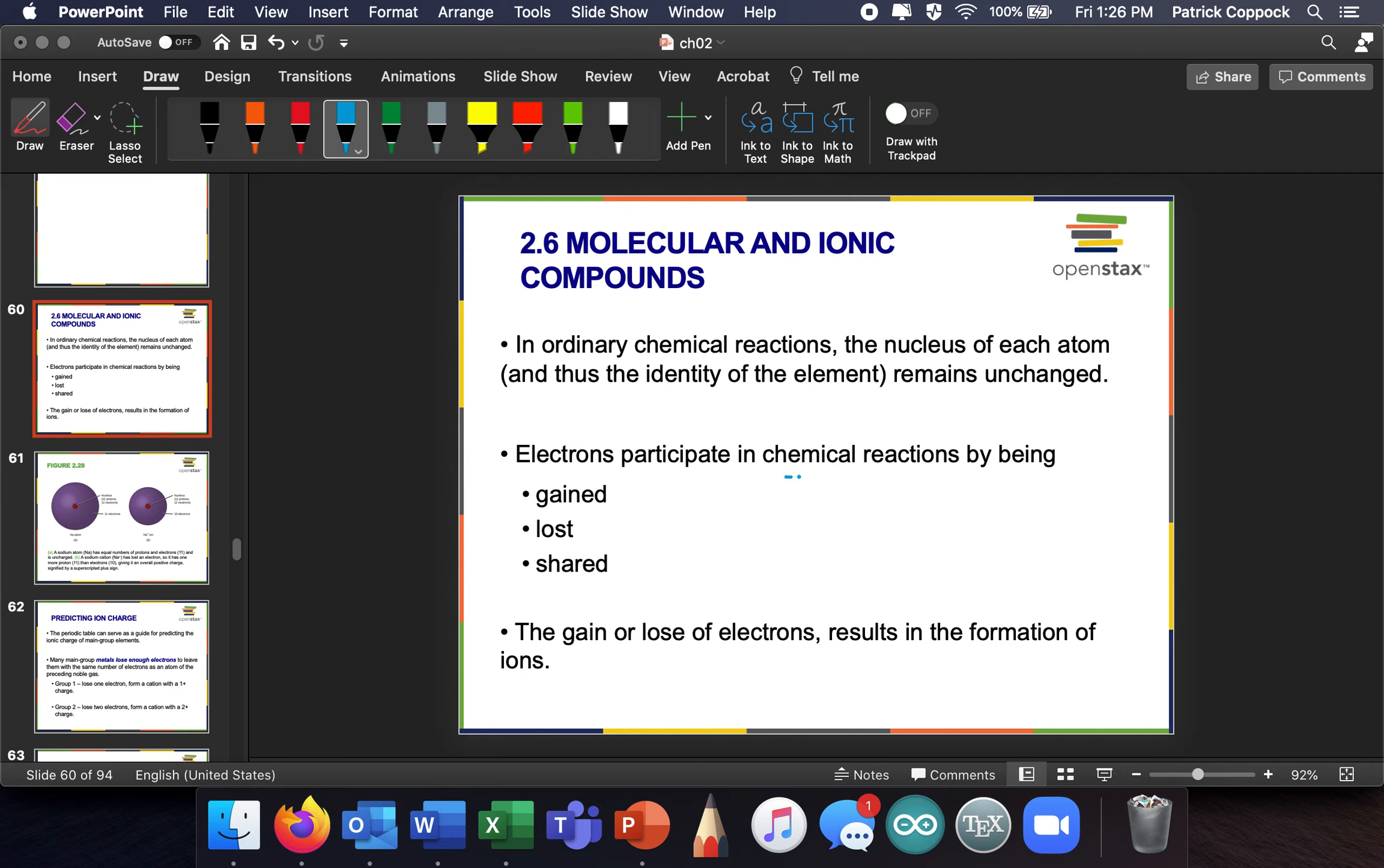Electrons participate in chemical reactions by being either gained, lost, or shared. The gaining or losing of electrons results in the formation of ions. When they gain them, when one gains, the other one loses, right?